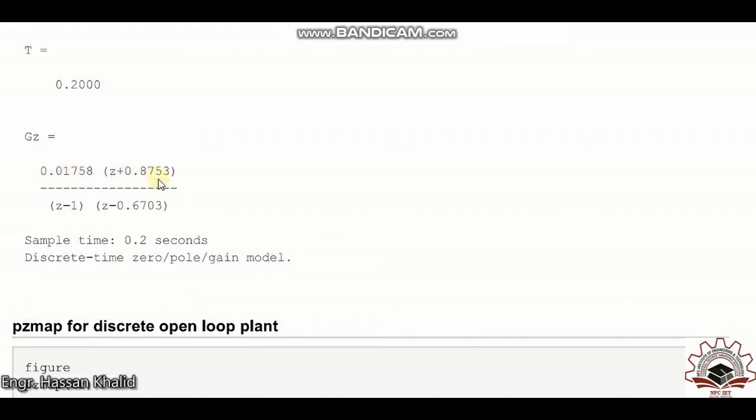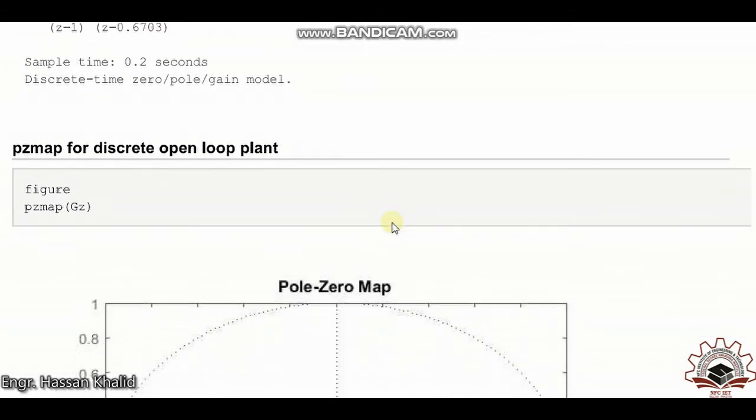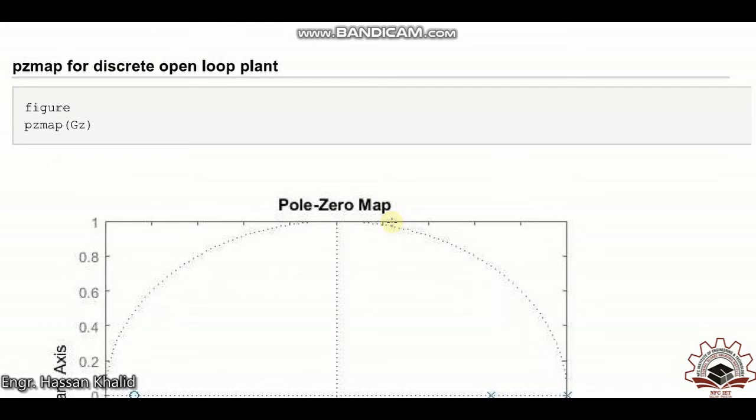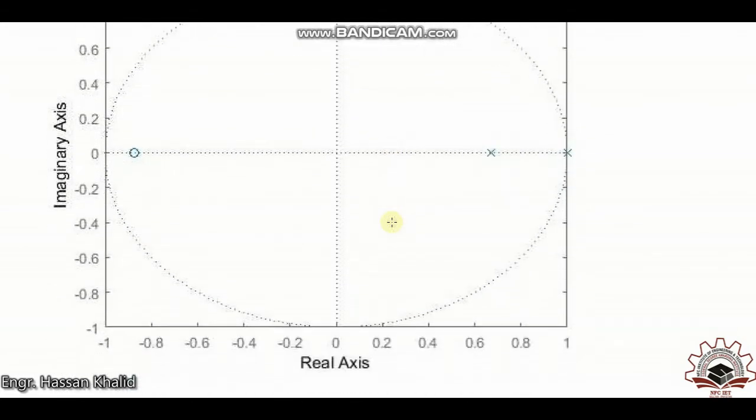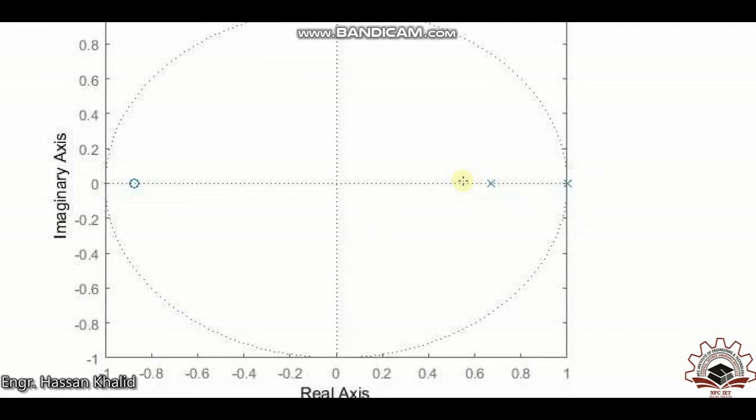The poles are at 1 and 0.6703. Let's check out the PZ map for our open loop transfer function. You can easily see that there are two poles at 0.6 something and at 1, and one zero at 0.8.